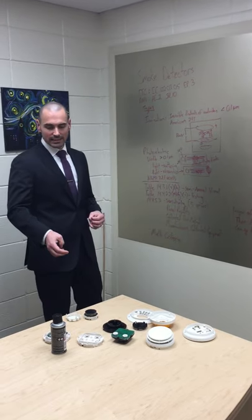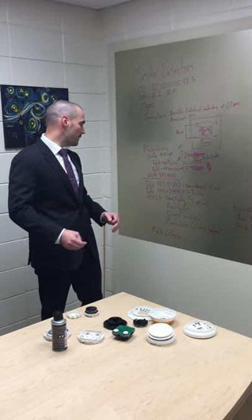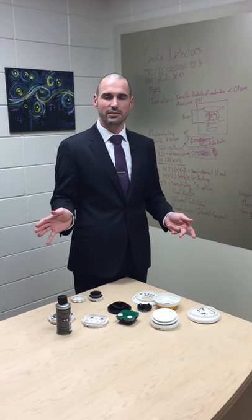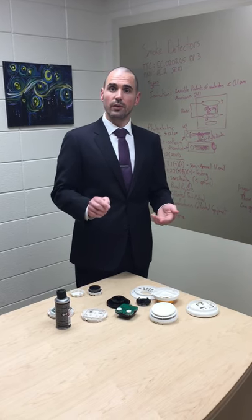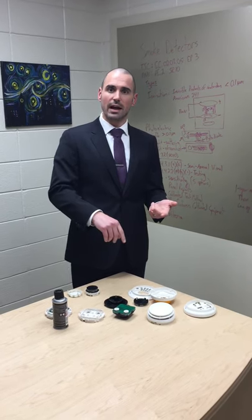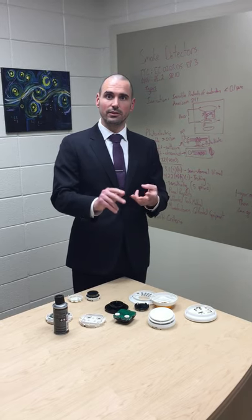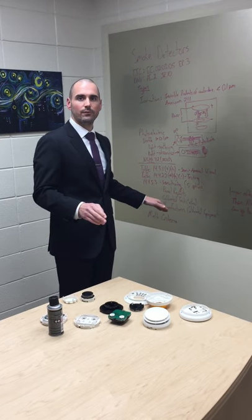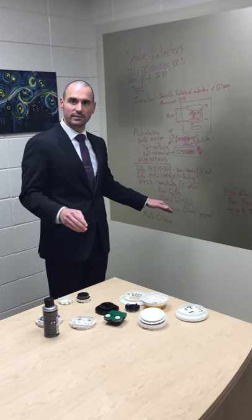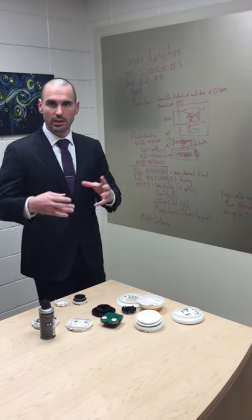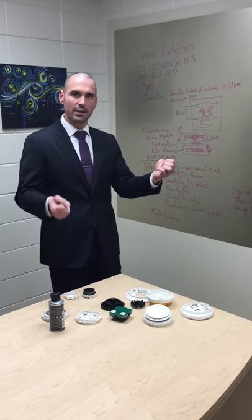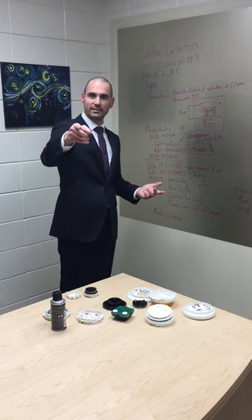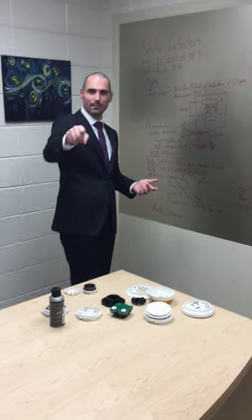One last thing to mention before we wrap up: multi-criteria detectors. Some detectors have multiple functions — smoke, rate-of-rise heat, and fixed-temperature heat can all be combined. Multi-criteria detectors require individual tests for each function. So if a detector covers both smoke and heat, you must test the smoke function and the heat function separately. That's it — until next time, happy learning.